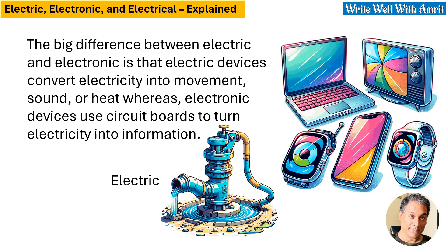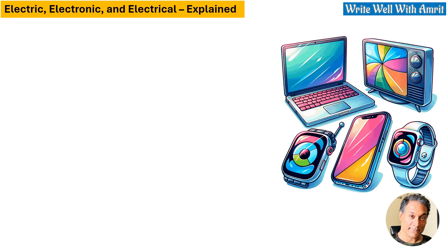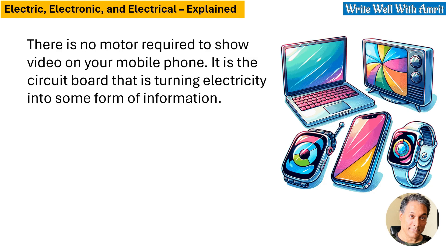The big difference between electric and electronic is that electric devices convert electricity into movement, sound, or heat, whereas electronic devices use circuit boards to turn electricity into information. There is no motor required to show video on your mobile phone — it is the circuit board that is turning electricity into some form of information.